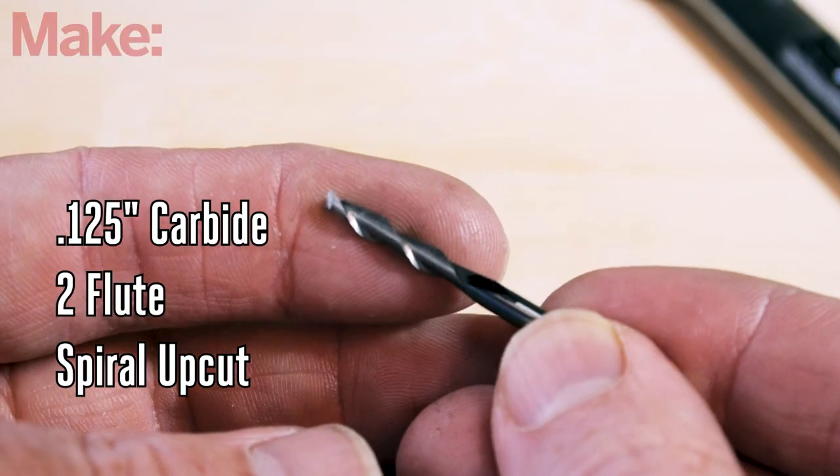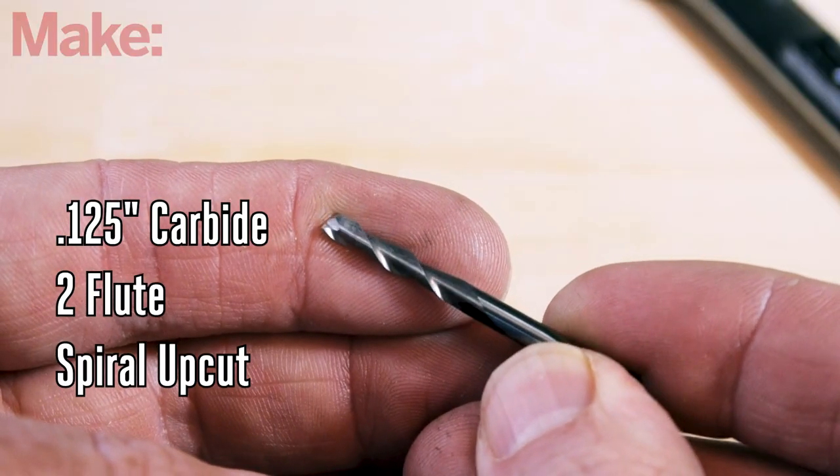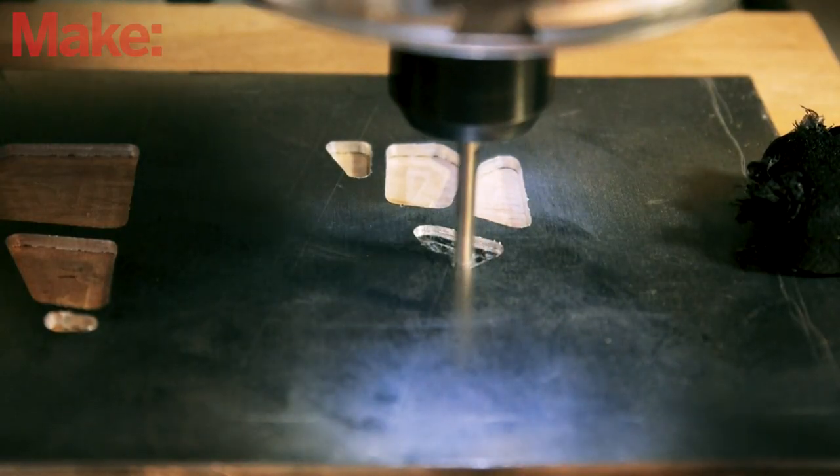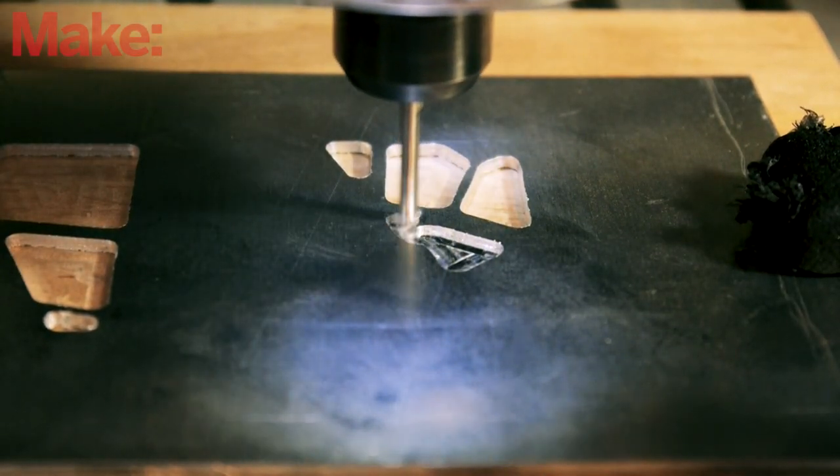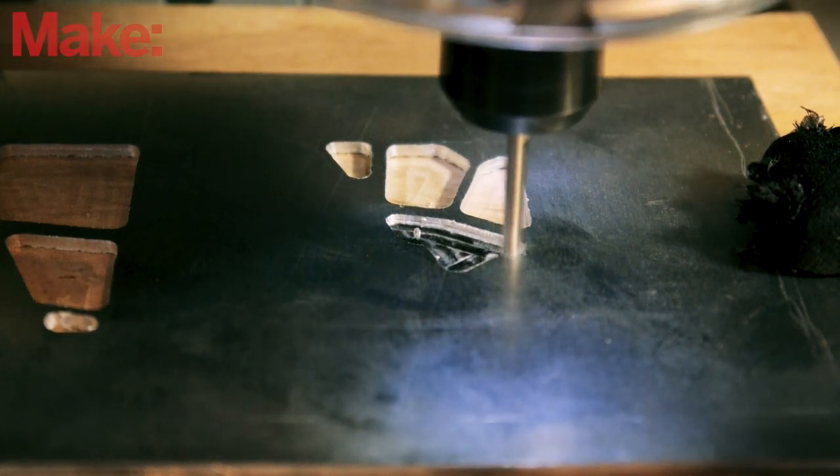The aluminum is cut using this carbide 1/8 inch 2-flute spiral upcut bit. The helix shape helps with chip ejection to keep the bit cool, and I'm just using my shop vac to blow the chips clear.